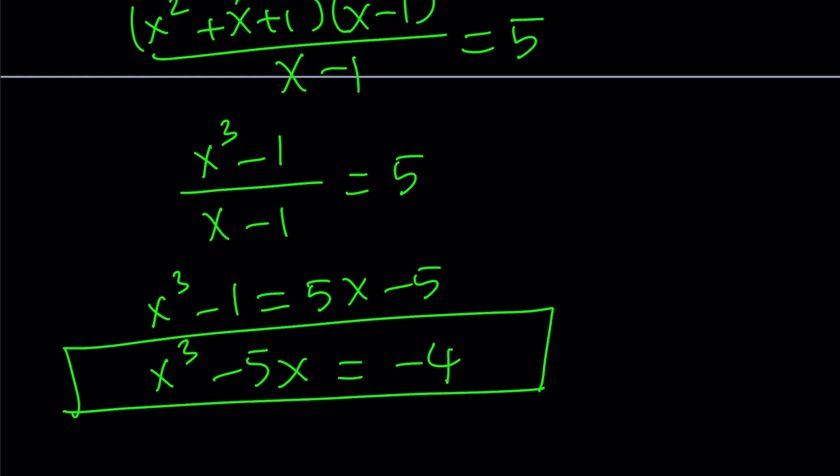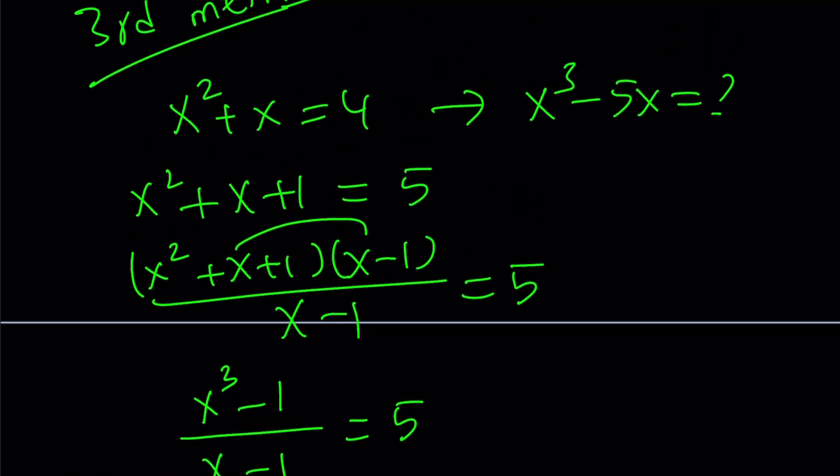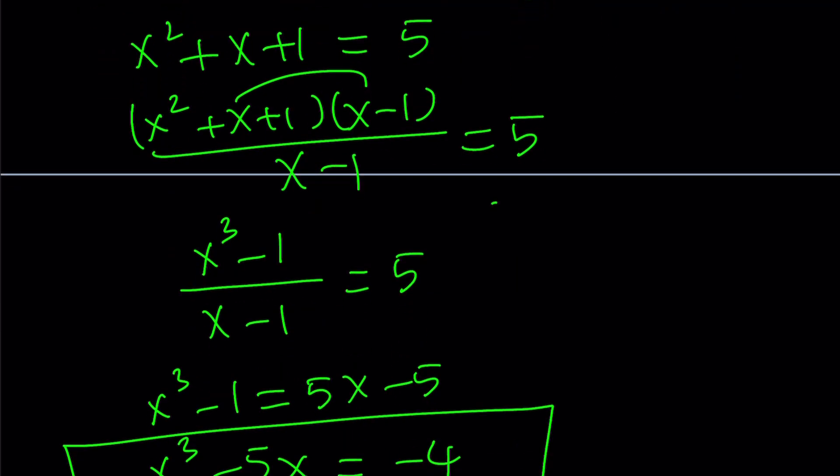There you go. So this method is not always easy to see, but always take advantage. If you see x squared plus x or x squared minus x, and if you have an x cubed, always think about sum of two cubes and difference of two cubes. And by the way, the difference of two cubes is given by the following formula, and the sum is similar to this. Just replace b with negative b. All right? Let's go ahead and take a look at the fourth method.